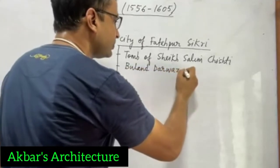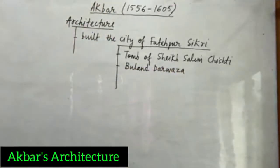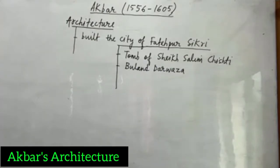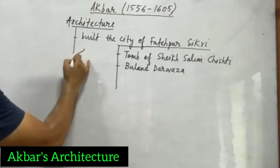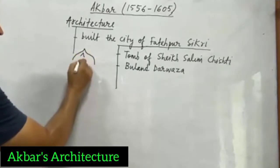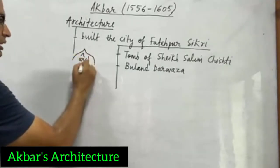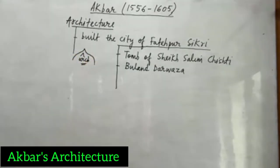Then we have the famous Buland Darwaza. Buland Darwaza is a structure which, during the medieval Mughal period, is having the largest arc. The arcuate style is a part of Muslim architecture, and this monument has the largest and biggest arc of medieval architecture.